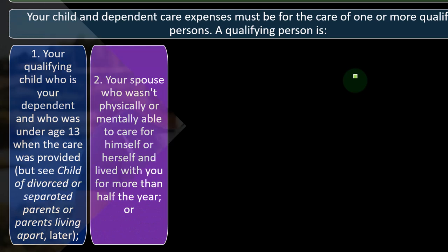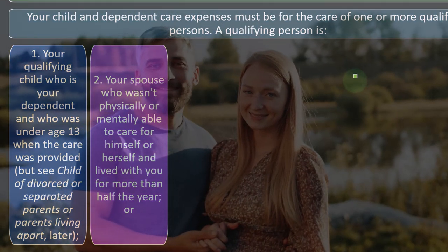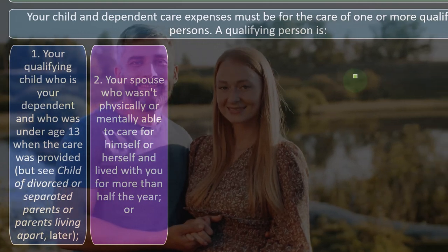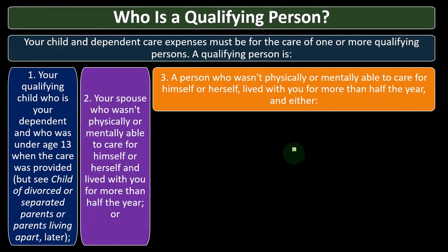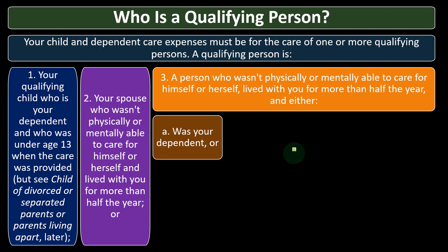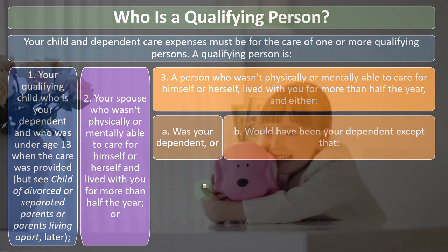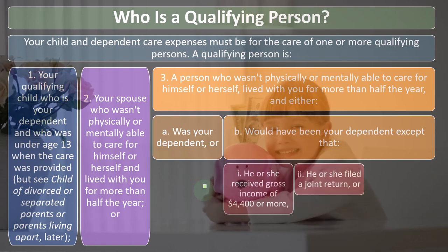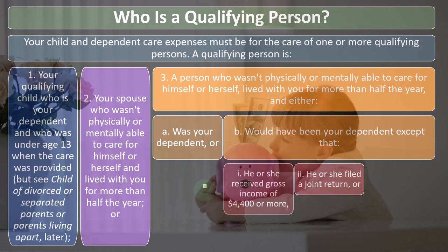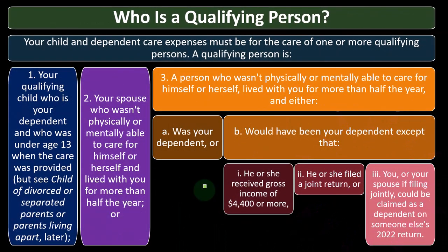A qualifying person also includes: your spouse who wasn't physically or mentally able to care for himself or herself and lived with you for more than half the year; or a person who wasn't physically or mentally able to care for himself or herself, lived with you for more than half the year, and either was your dependent, or would have been your dependent except that he or she received gross income of $4,400 or more, filed a joint return, or could be claimed as a dependent on someone else's 2022 return.